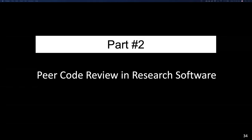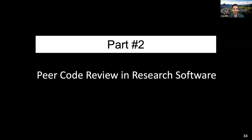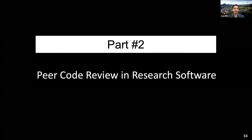Moving on to the code review part. In the first part, we discussed that research software has complex computational behavior. This complexity, along with the fact that expected outputs are often unknown, makes it difficult to test research software. In many cases, the input space of research software is so vast that it is not feasible or even possible to develop a test suite. To remedy this situation, code review — a systematic examination of computer source code by peer developers to find and remove vulnerabilities — is recognized as a beneficial tool for improving software quality.